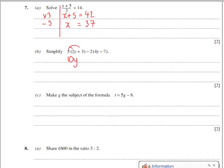So 5 times 2y is 10y. 5 threes are 15. Minus 2 times 4y is minus 8y. And minus 2 times minus 7 is plus 14.